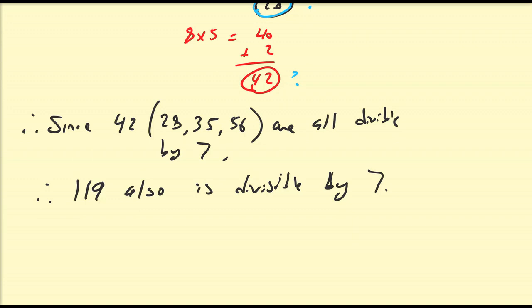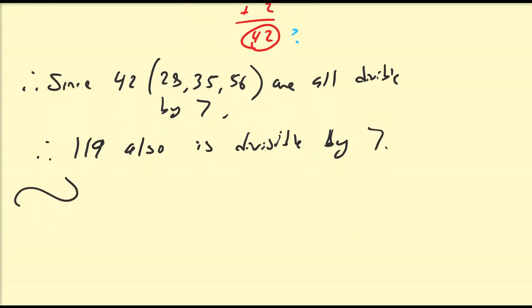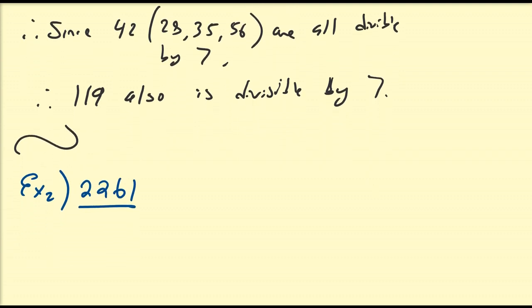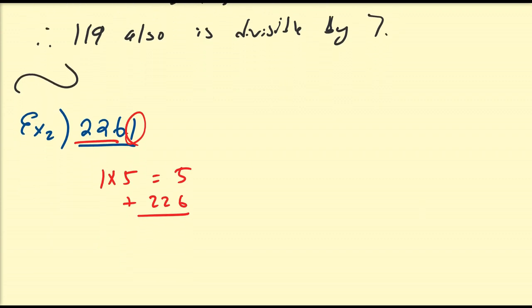Let's look at a slightly larger number. Example 2: let's consider the number 2,261. I'm going to grab the last digit, which is 1. So 1 times 5 is equal to 5, and I'm going to add to it 226. So 5 plus 6 is 11 — carry the 1 — 2 plus 1 is 3, and then 2. The question becomes: is 231 divisible by 7?